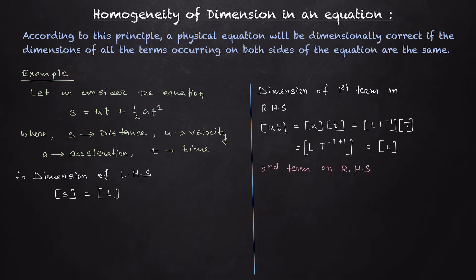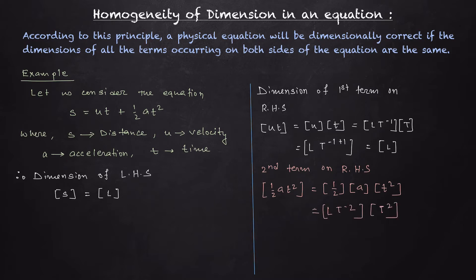Now let's check the dimension of the second term, ½at². The constant ½ is dimensionless. The dimension of acceleration is LT⁻² and t² is T². Collecting terms: LT^(−2+2) = LT⁰ = L. So the dimension of ½at² is also L. Since all terms — s, ut, and ½at² — have dimension L, this equation is dimensionally correct.